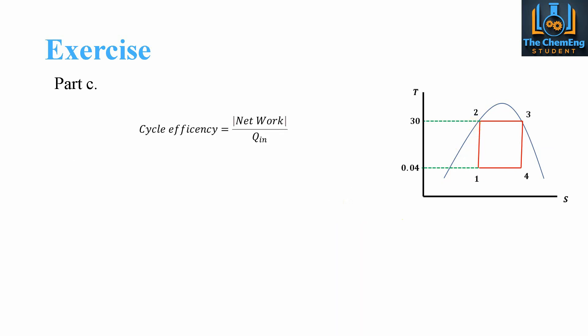The cycle efficiency is the net work divided by the energy input. We take |−940 + 215.5| divided by Qin = 1795. We get a cycle efficiency of 0.404 — just above 40%.